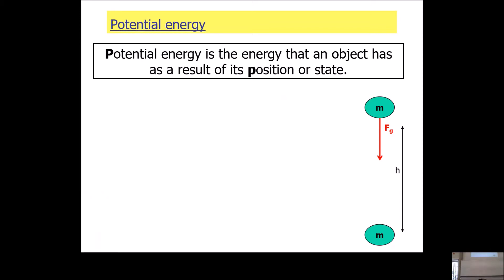The minimum force you need to lift an object is its weight. If the force you exert is equal to its weight, you only need a force bigger than its weight for a fraction of a second to accelerate it. Then you can drop the force back to equal the weight, and it carries on moving with constant velocity.